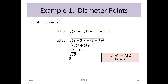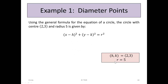So we now have h, k = (2, 3) and r = 5. We have all the information we need to define the circle. Using the general formula (x - h)² + (y - k)² = r², we substitute h = 2, k = 3, and r = 5. The equation of the circle is (x - 2)² + (y - 3)² = 25. We've identified the circle from the two points representing the diameter.